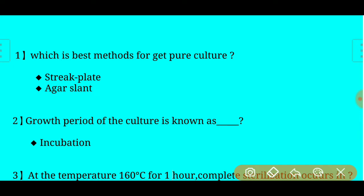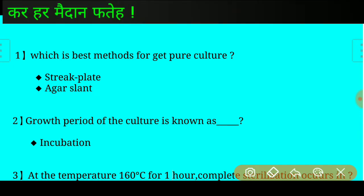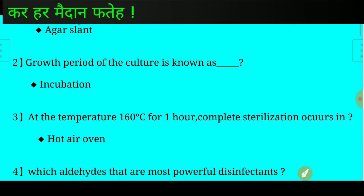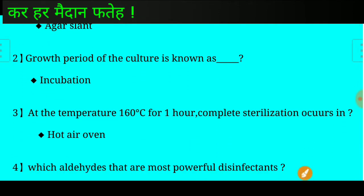Question number one: Which is the best method to get a pure culture? Answer: Streak plate and agar plate are the best methods to get a pure culture. Question number two: Growth period of the culture is known as?